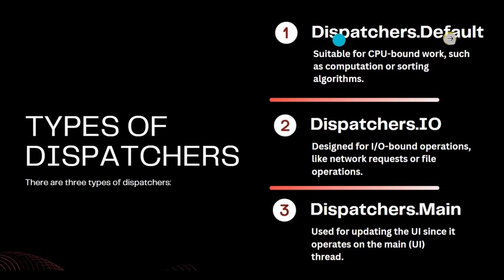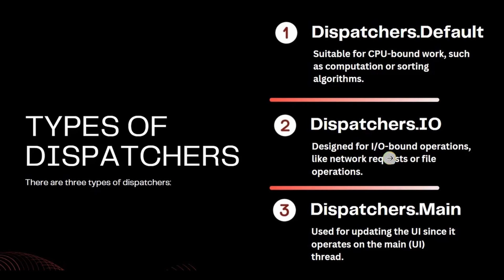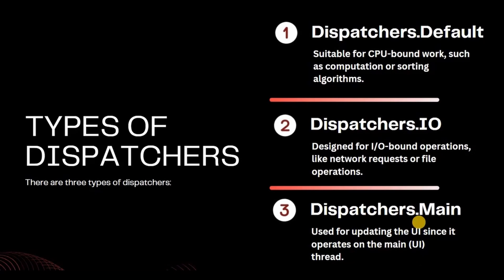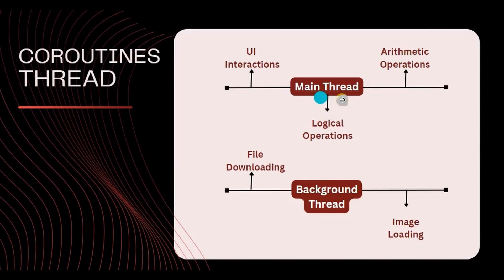First is Dispatcher.Default, second is Dispatcher.IO, and third is Dispatcher.Main. For CPU-based operations such as computing or sorting algorithms, use Dispatcher.Default. For IO-based operations such as network requests or file operations, use Dispatcher.IO — that is the background thread. For all UI-related operations like setOnClickListener, buttons, or setText, use Dispatcher.Main — that is the main thread itself.